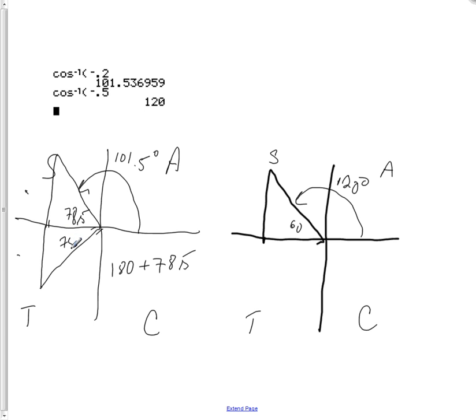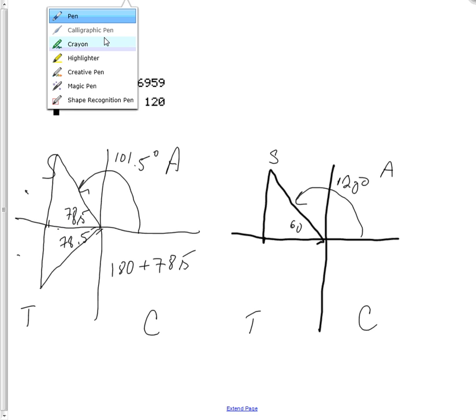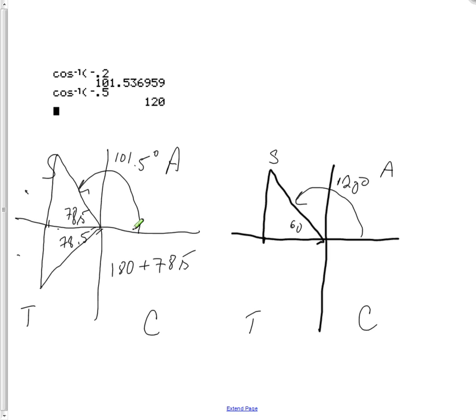I know that that reference angle down here is also 78.5. So that means in order to find this angle here, let me get a different color. If I'm going to get this angle here, I need to add that reference angle to 180.